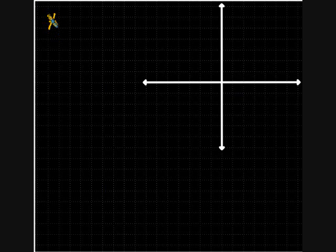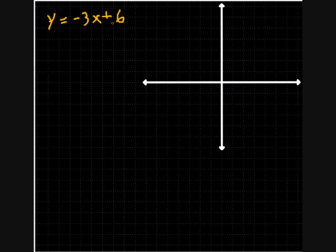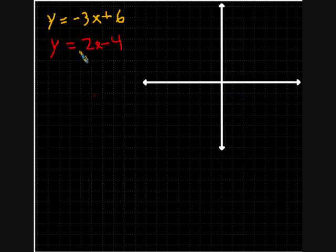Let's take a look at our first equation: Y equals negative 3X plus 6. And then we're also going to graph the equation Y equals 2X minus 4. I've written them in two different colors because we'll draw two different lines in two different colors. So first, let's start with the yellow.